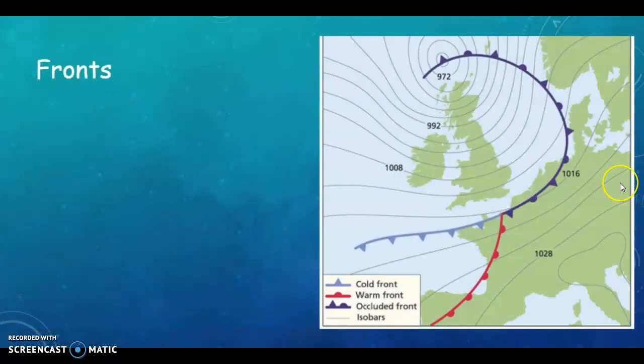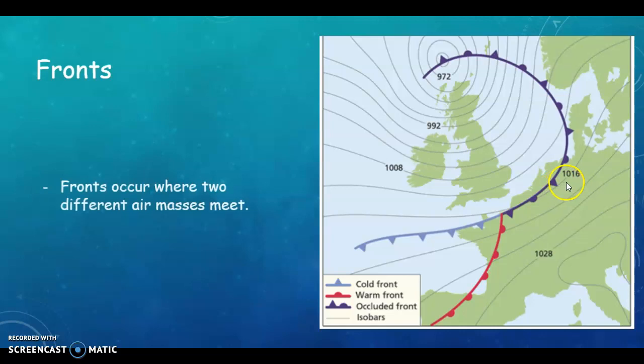Now a front. So these are the three types of weather fronts that you need to know about. So we have your cold front in blue with triangles, your warm front in red with semicircles, and an occluded front in purple. It doesn't come up very purple here, but it's purple with your triangles and your semicircles. So fronts occur when two different air masses meet. So our two different air masses are our cold air mass or our cool air mass and our warm air mass.